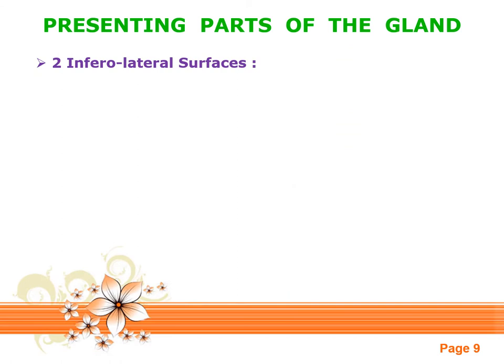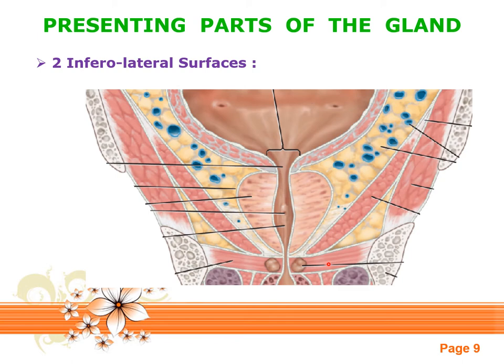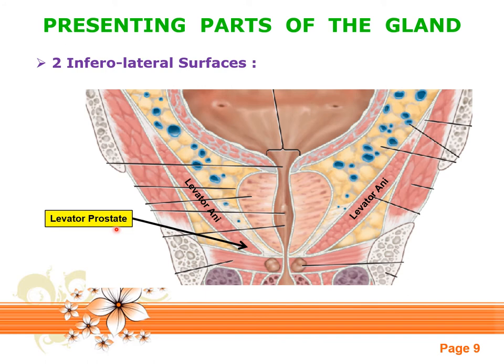The two inferolateral surfaces of the gland are related to the prostatic plexus of veins, a good amount of fat, and the pelvic diaphragm, which is formed by the levator ani muscles. Further laterally, they are related to the ischiorectal fossa, obturator internus muscle, and obturator membrane, which bound the lateral walls of the lesser pelvis. The inferiormost fibers of the levator ani muscles support the prostate gland from below and are therefore known as levator prostatae.